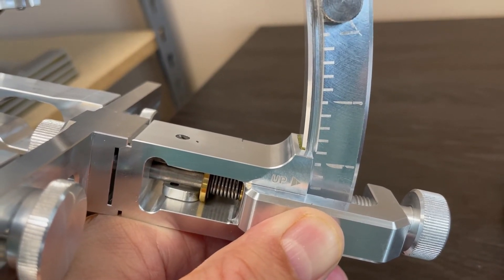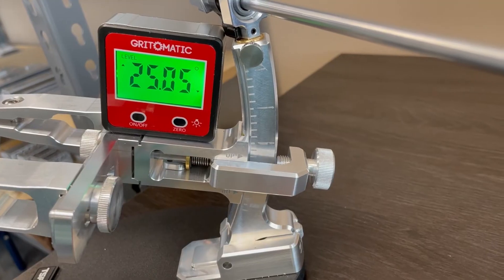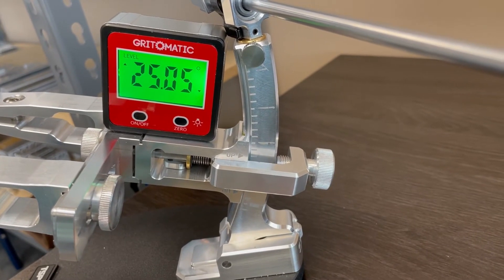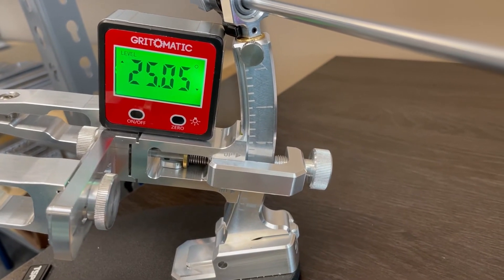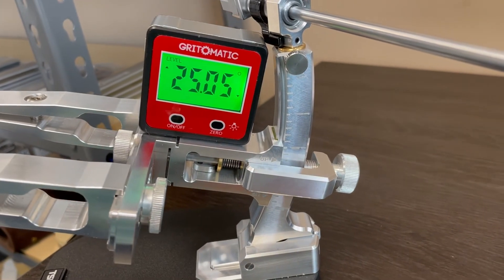Once this angle is determined, this setting should not be changed during your sharpening session. The angle gauge will show you the degree of the angle that you have selected.